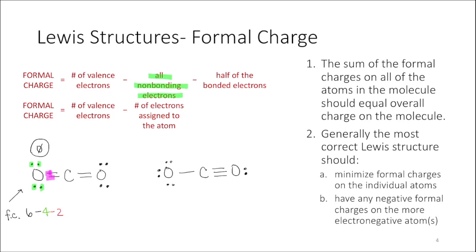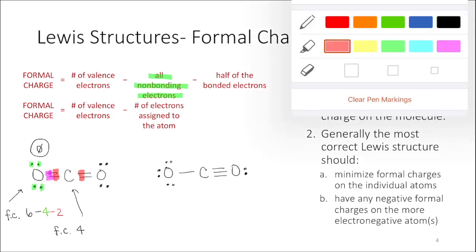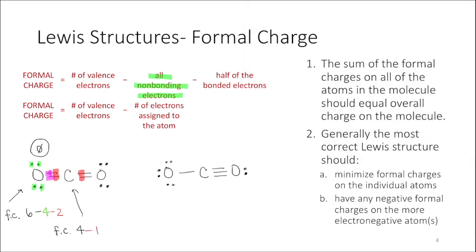We're going to do this for each atom in our structure. For carbon: carbon has four valence electrons. There are no non-bonding electrons on carbon here, and half of the bonded electrons — one from each bond — gives four electrons assigned to it, since carbon has four bonds (half of eight bonding electrons). So the formal charge for carbon is four minus four, which is zero.